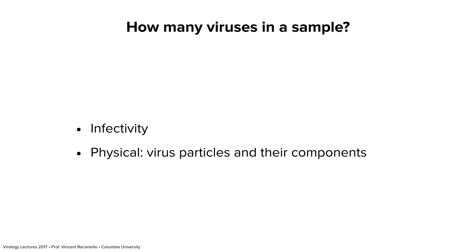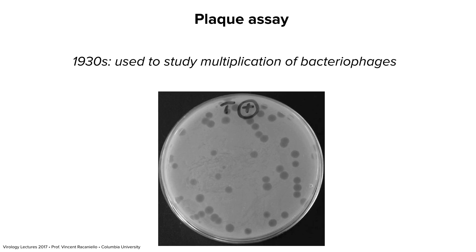Now let's move to quantification. We can grow viruses in cells, and the next step is to know how many virus particles are there, because if you want to do experiments you have to put a defined number of viruses on cells or into animals. We have two broad ways of measuring virus particles: by infectivity — actually measuring infectious viruses — and by physical measurements, which doesn't tell you infectivity, just the number of particles and their components.